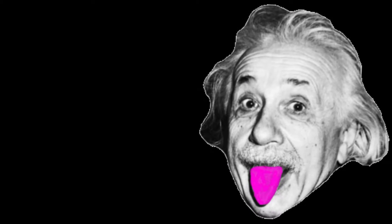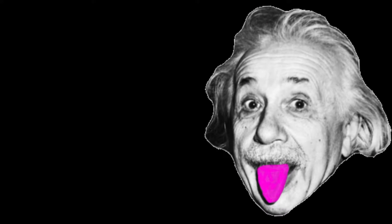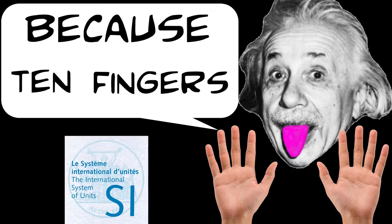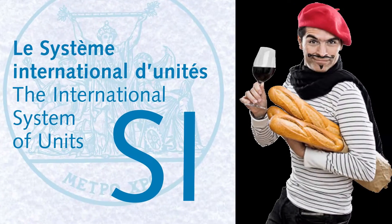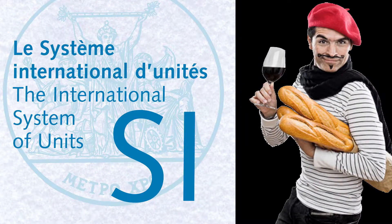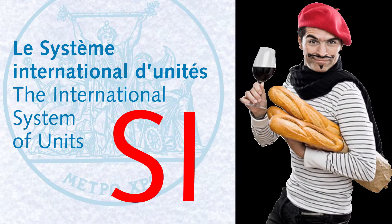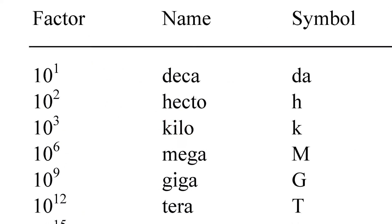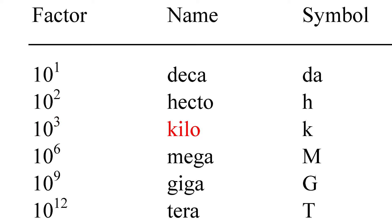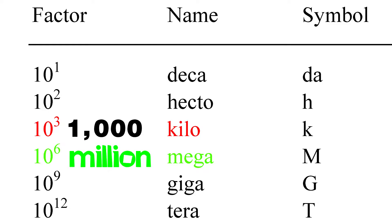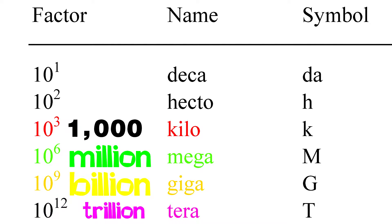In most of science, the standard convention is to think in terms of powers of 10. So under the Système International d'Unités or SI, the prefix kilo denotes 10 to the power of 3, or 1000. Mega is 10 to the power of 6, or a million. Giga is 10 to the power of 9, or a billion. Tera is 10 to the power of 12, or a trillion, and so on and so forth.